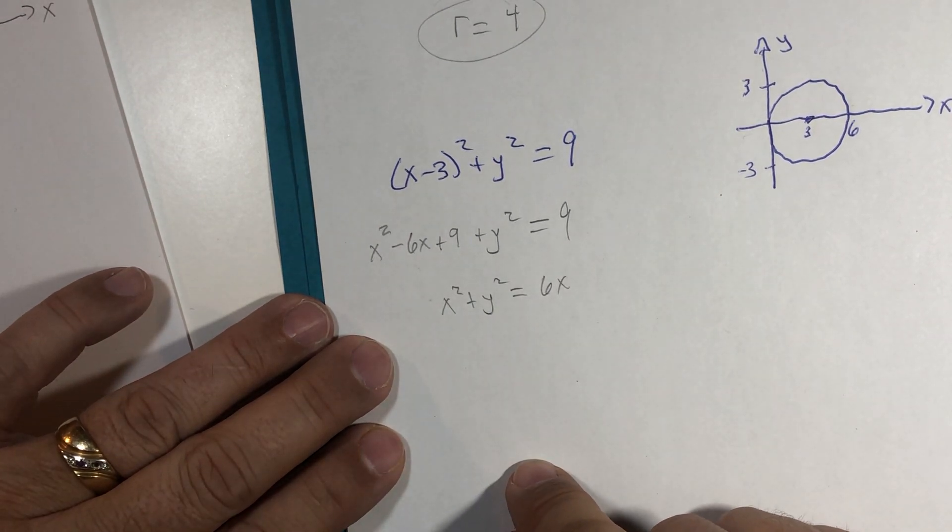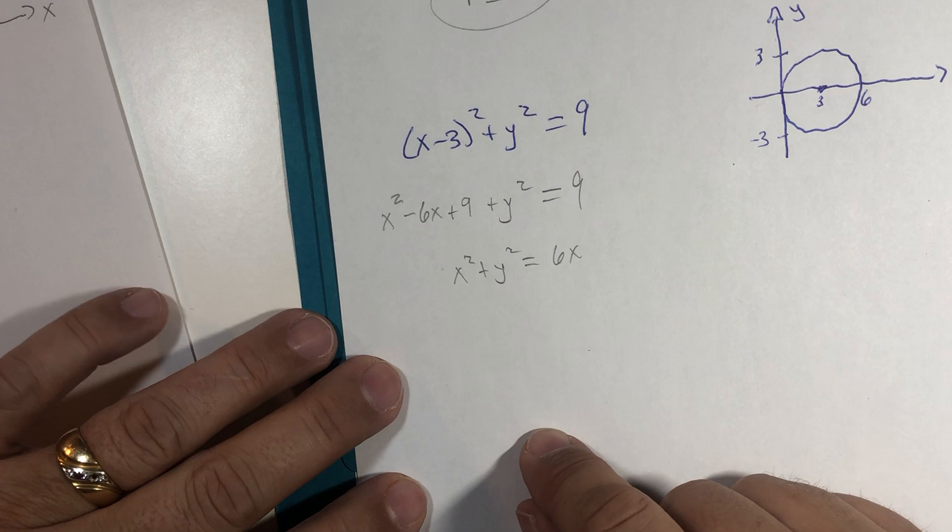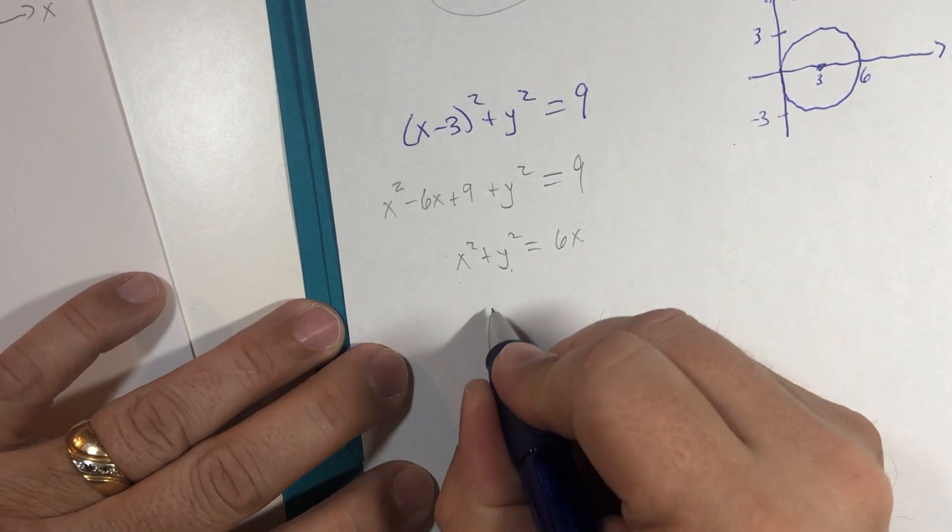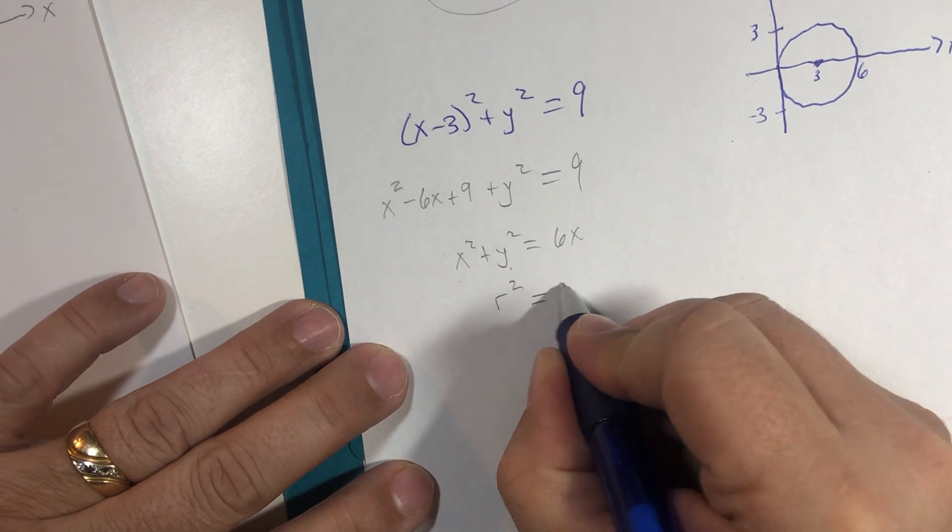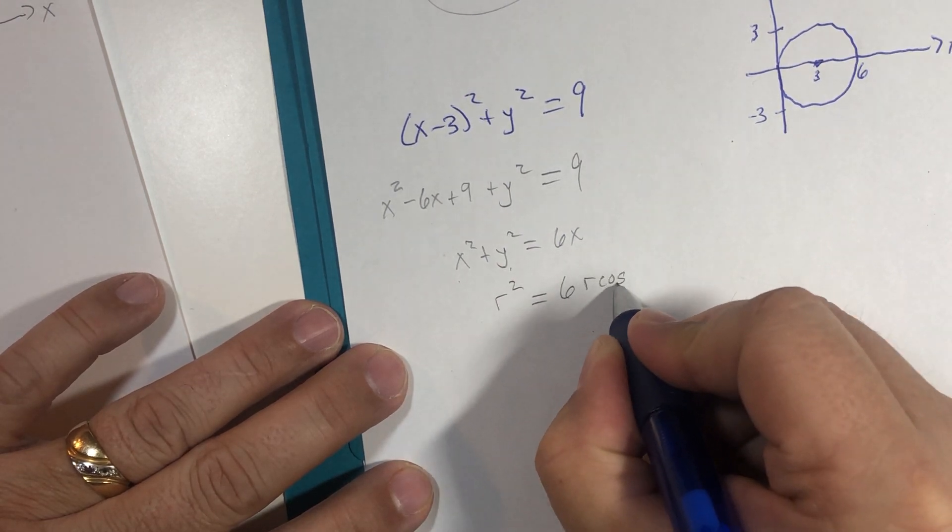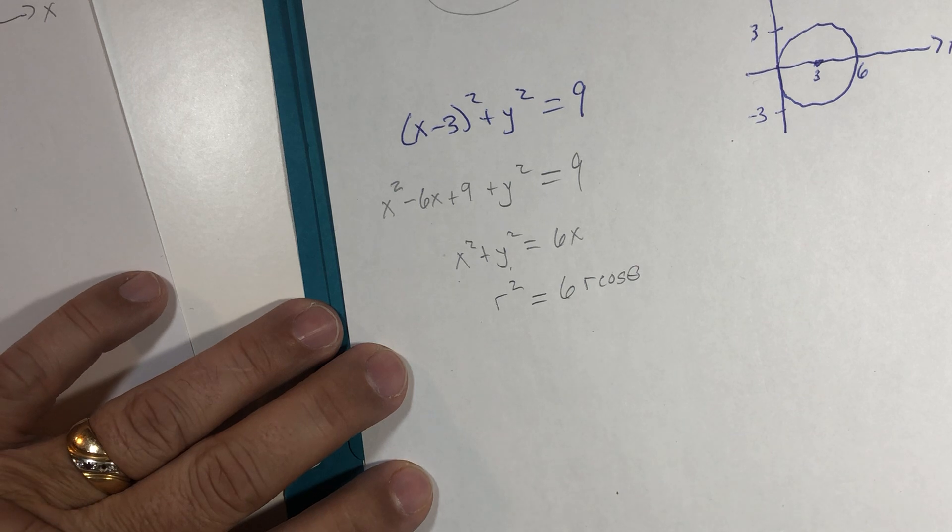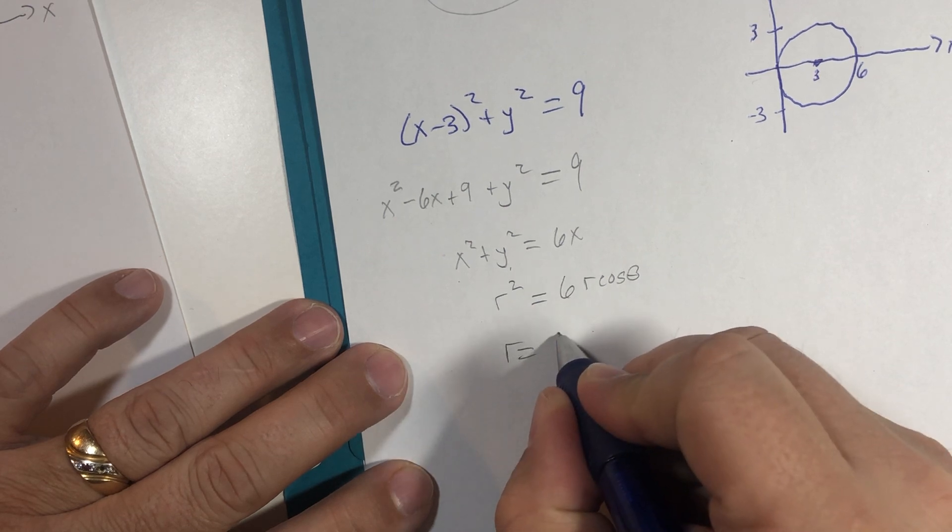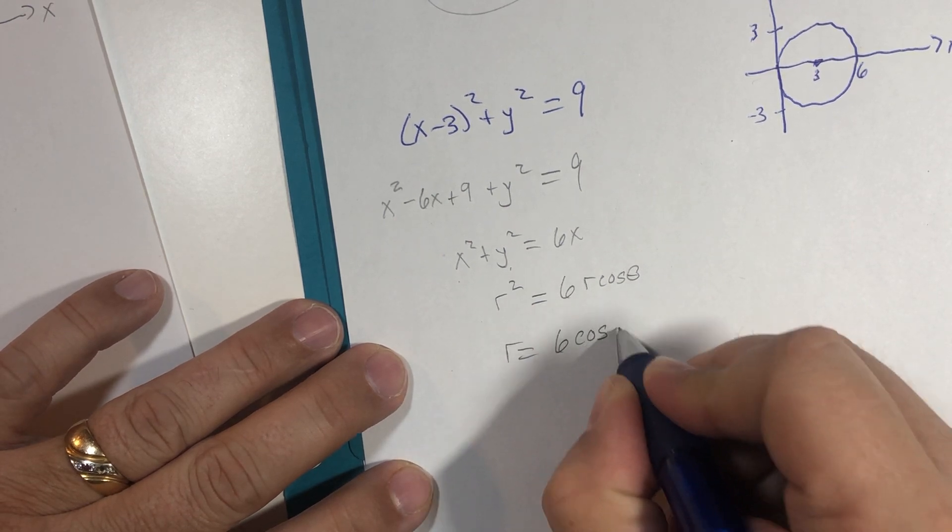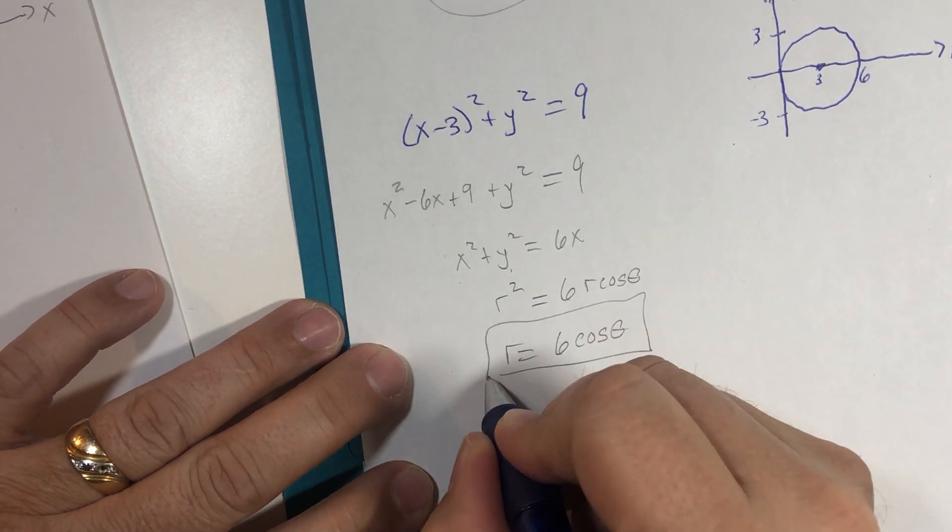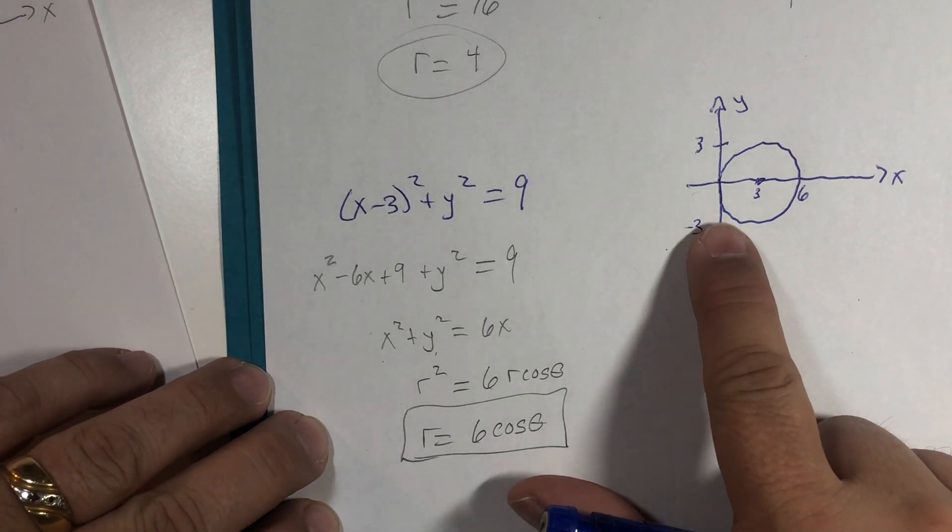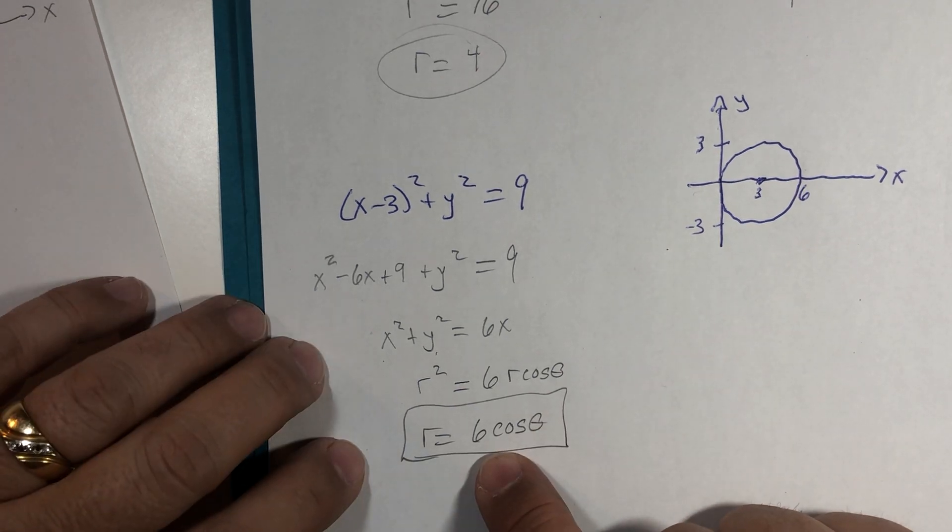x squared plus y squared is r squared, and x is r multiplied by the cosine of theta. And this could get you into trouble dividing by a variable. But if I'm going to divide both sides by r, r equals 6 cosine of theta represents that circle. It's radius isn't 6.